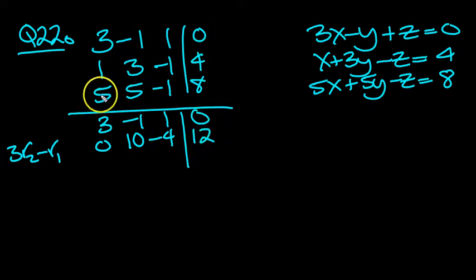And then for the five, we're going to have to do five of these, three of these, three row threes take away five row ones. So three of these take five of those is 15 take 15 which is 0. Three of these, 15 take away five of those is plus 5, 15 plus 5 is 20.